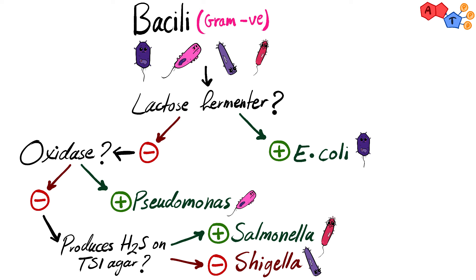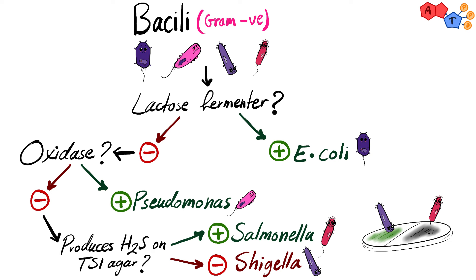Lastly, remember what we said about Hektoen's agar: Salmonella will grow in black colonies, and Shigella will grow in green colonies.